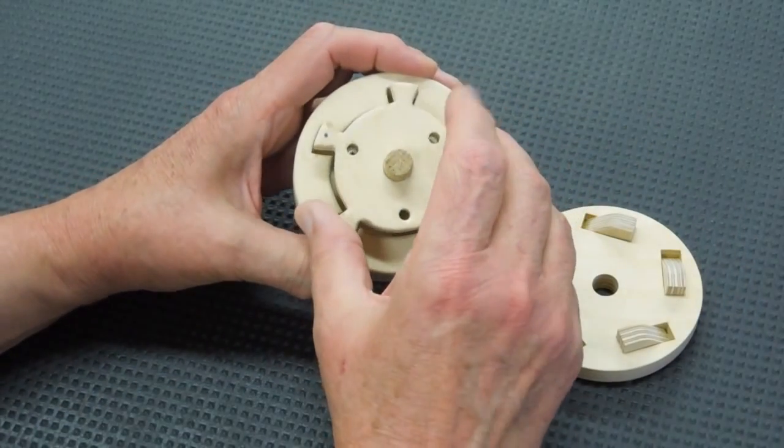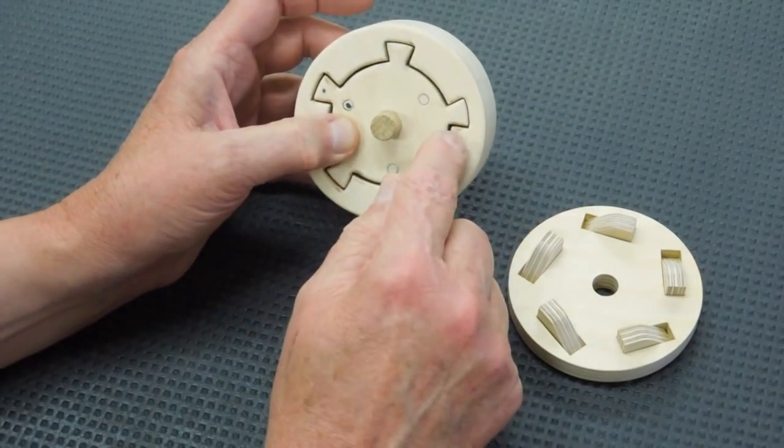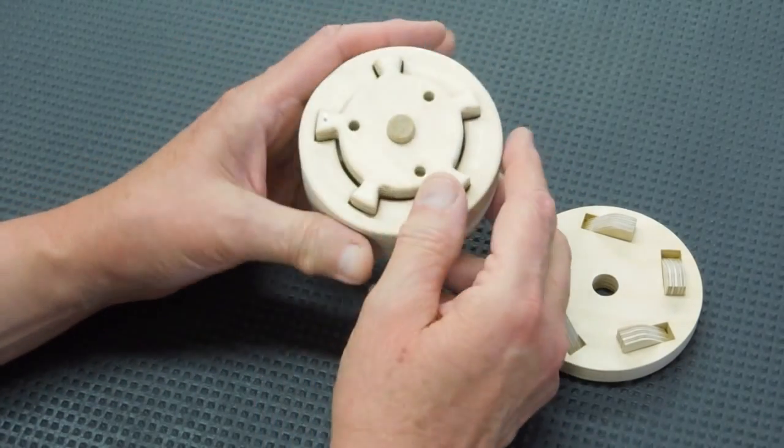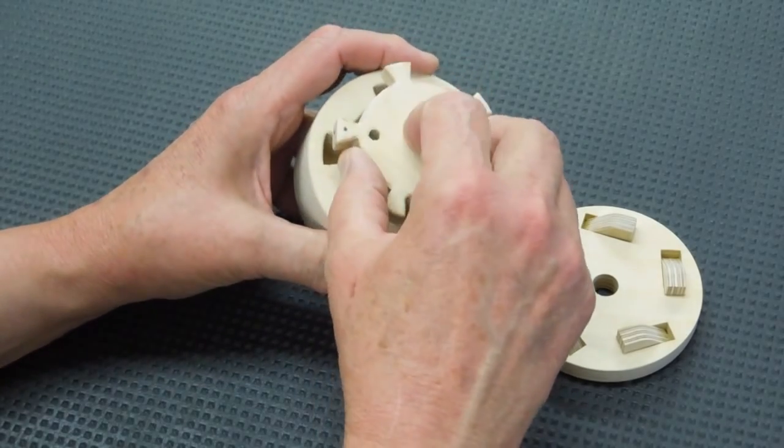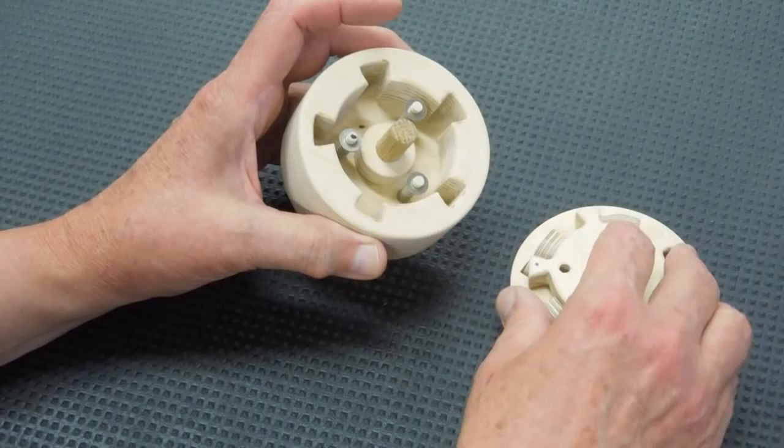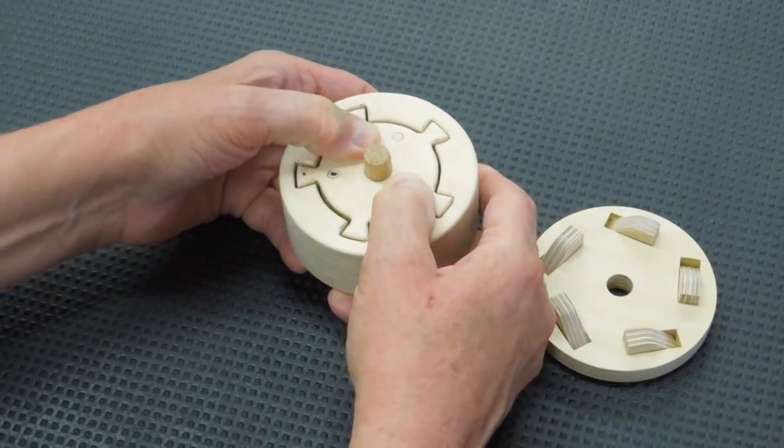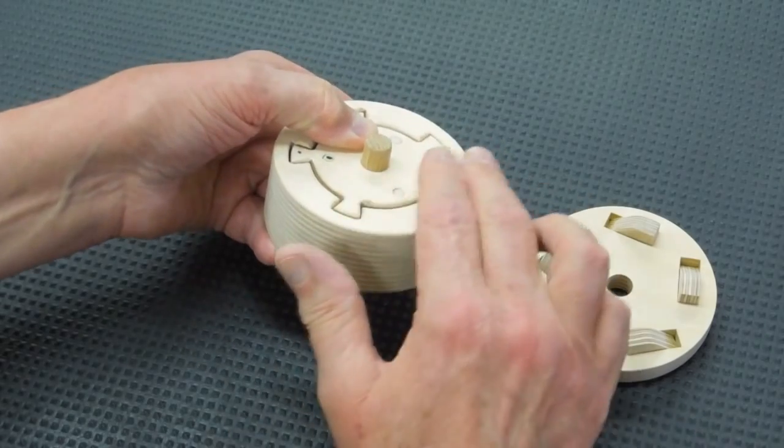The dog is cut to recess into this part, and this is a spacer to keep the dog from going in too deep when it's depressed, so it remains flush with that surface.